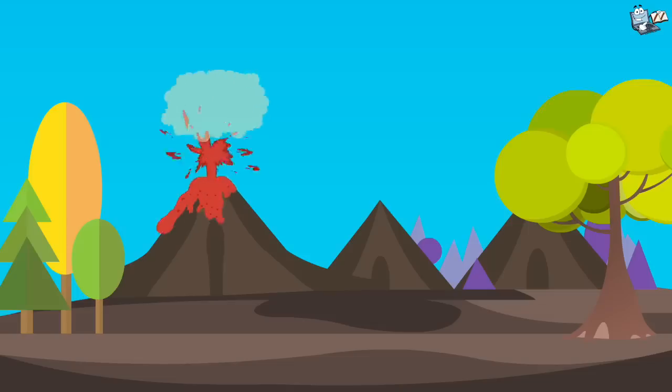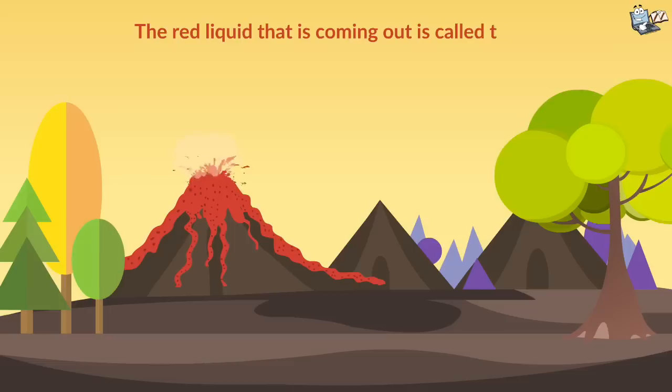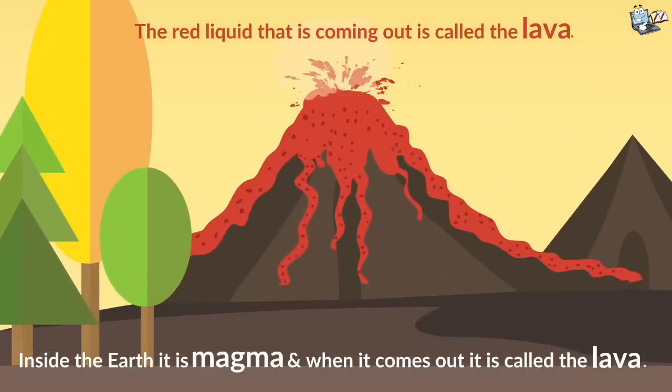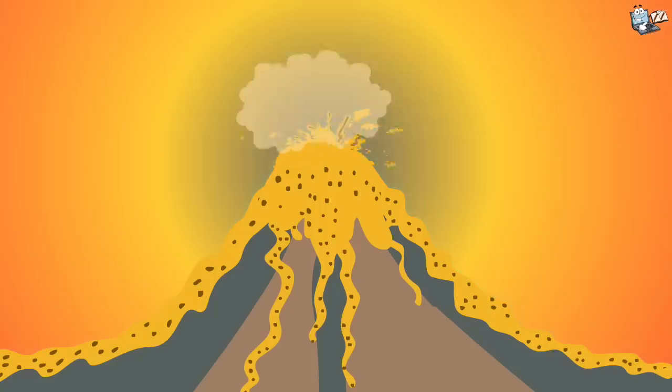Now look here. This is a volcanic eruption. The red liquid that is coming out is called lava. When it is inside the Earth, it is magma and when it comes out, it is called lava. Lava on the surface stops flowing and hardens into rocks when it gets cool. In 2017, Mount Agung, a volcano on the island of Bali in Indonesia, erupted violently enough to cause evacuation and air flight disruption.